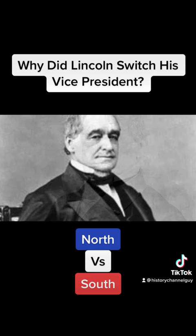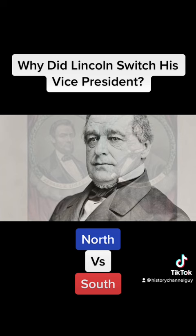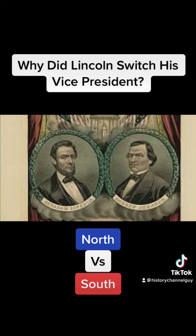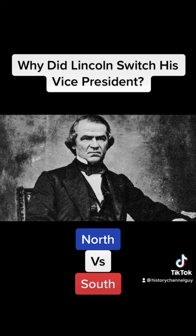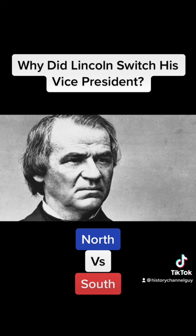During his 1864 re-election campaign, Lincoln wanted to preach a policy of unity, and therefore he picked a Southern Democrat to be his VP choice. Andrew Johnson was the only sitting senator from a Confederate state who did not resign his seat upon learning of his state's secession, so he seemed like the perfect vice president to help unify the North and South in the post-war United States.